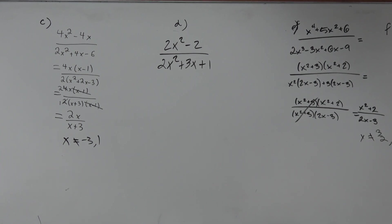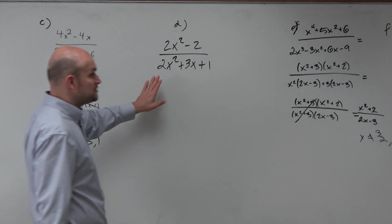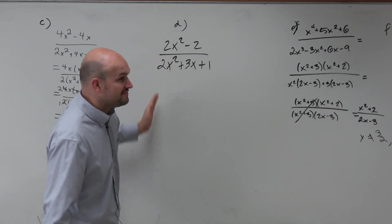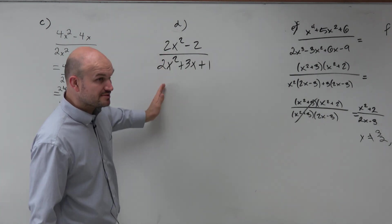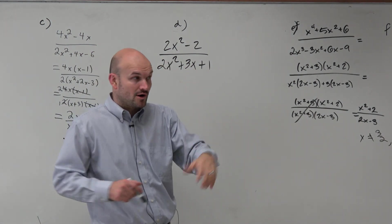So in this example, we can obviously see some 2's. But going back to that division property, since we have these quantities separated by multiplication, we can't just divide out these 2's. We have to write this in factored form.